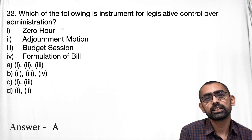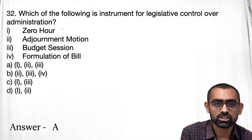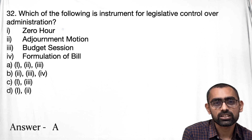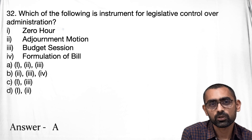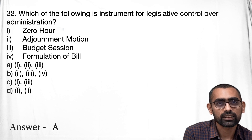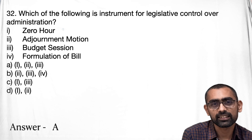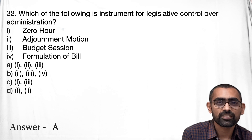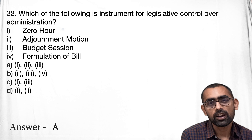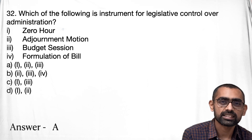Question number 32 is about legislative control over administration. Now, this kind of question where multiple options are there and you have to select which of the following are actually true can be a little tricky, particularly when the options are very close. So let's check one by one. If you have read the basics, then you should be able to answer this question.